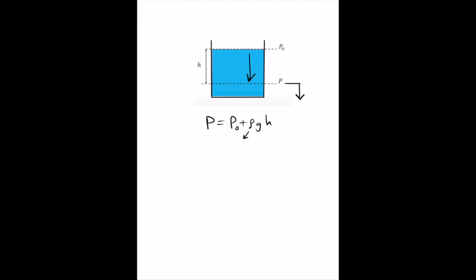Pascal's law shows that the pressure at the depth H is equal to P0 plus rho GH. Rho is the liquid density, G is the gravitation acceleration, and H is the depth.